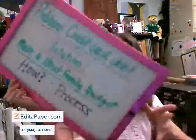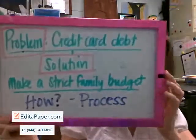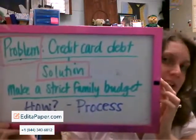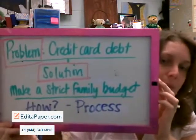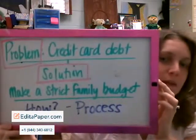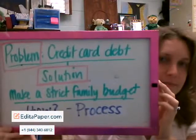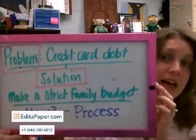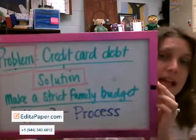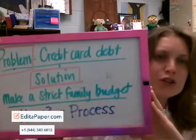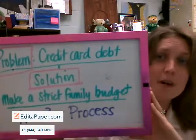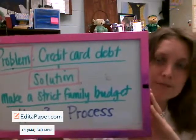I want to give you a brief example here. This problem is on the know list, that's why I'm giving you this example. I have the problem of credit card debt. I'm going to identify the problem and then attempt to solve it. I only give you one solution just for example's sake, but your paper is going to have multiple solutions to your problem.